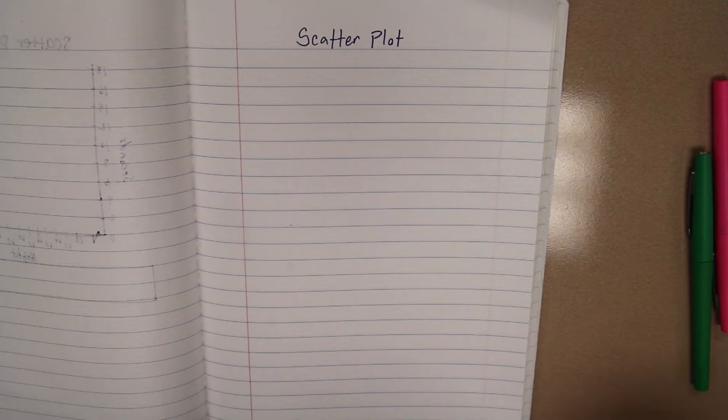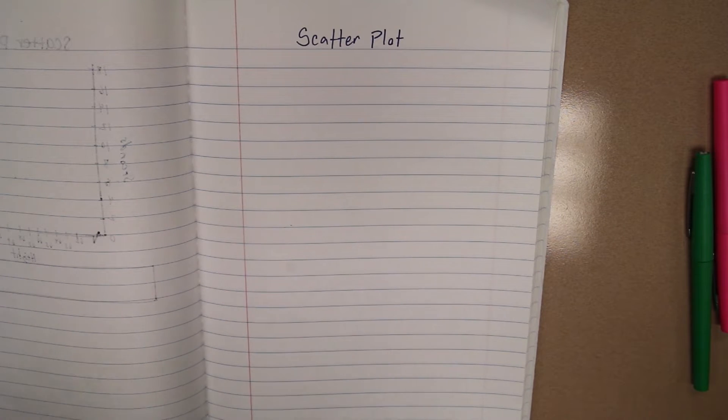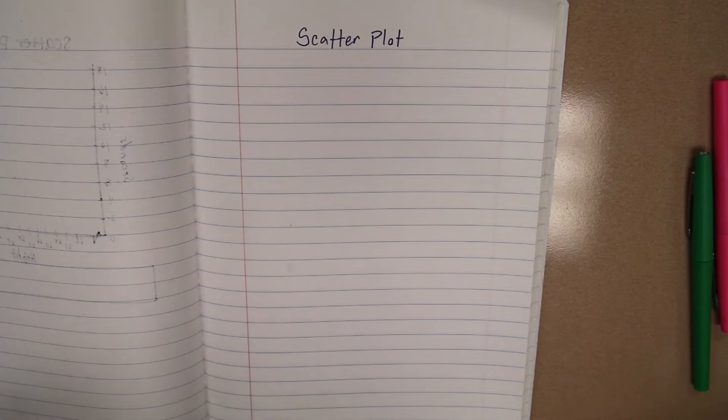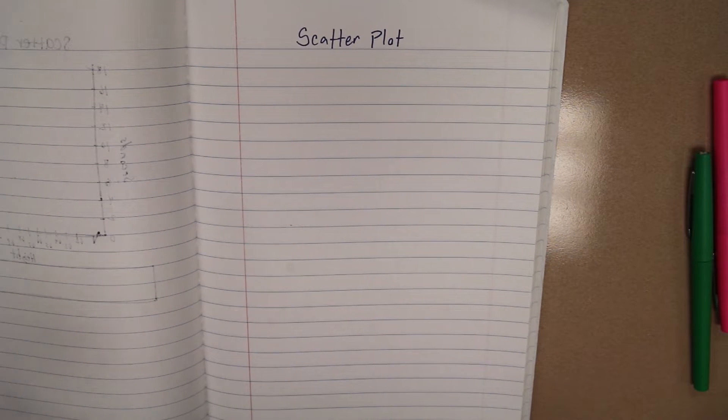The taller a person is, does that give them an advantage in the race? Will that help them to win faster? Or is it the shorter a person is, they will win faster. So what we're going to do is we're going to create a scatter plot to see the correlation.